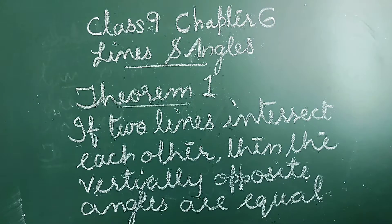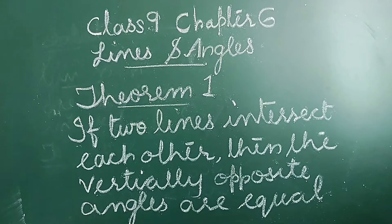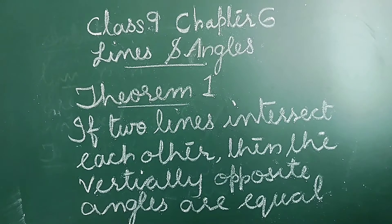Class 9, Chapter 6, Lines and Angles — Theorem 1: If two lines intersect each other, then the vertically opposite angles are equal.